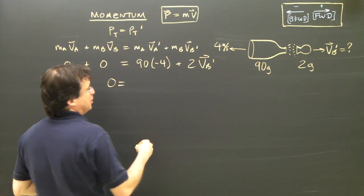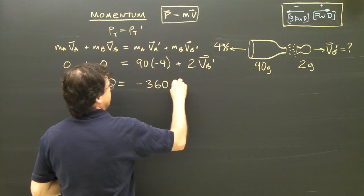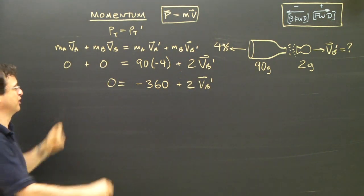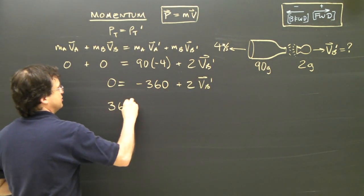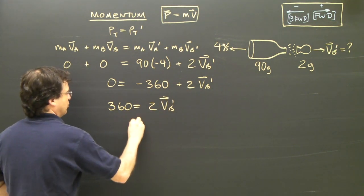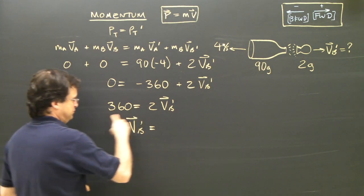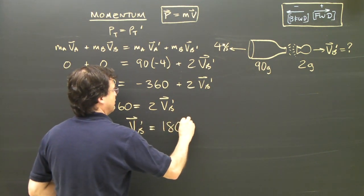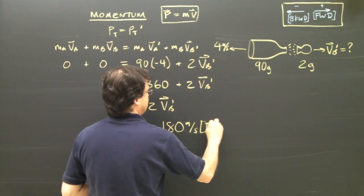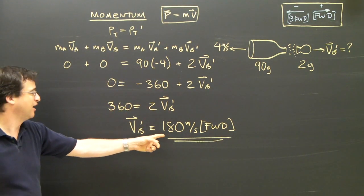So let's see what I've got here. Zero equals 90 times four is negative 360 plus 2VB afterwards. So I'm going to bring this 360 over to this side. 360 equals 2VB afterwards. So the final velocity of B is the 360 divided by the 2. It's going to be positive 180 meters per second. It's positive. So that's forward. The final velocity is incredibly high. It's 180 meters per second forward.